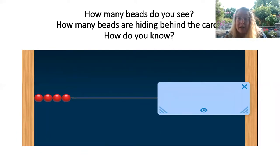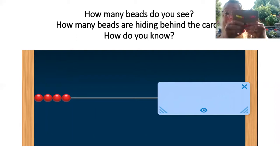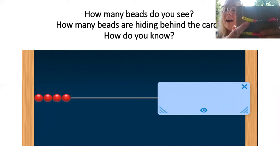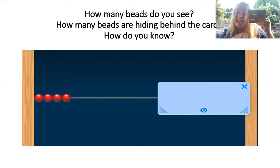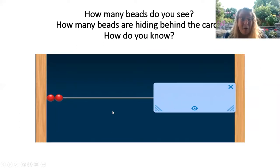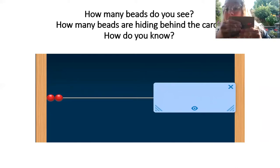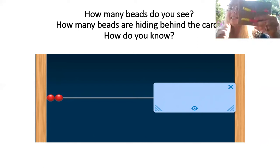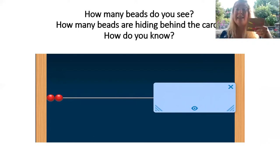How many can you make on your number rack? Did you do it? Four. Four beads. Which means there are six beads hiding behind the card. How many beads do you see now? This one's easy. Did you make it? Two. How many beads are hiding behind the card? Five, six, seven, eight. Eight. Two and eight make 10. Awesome.